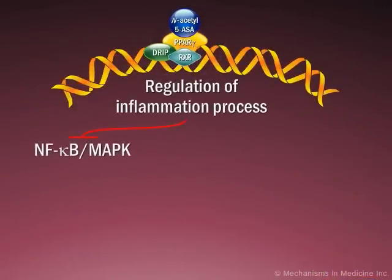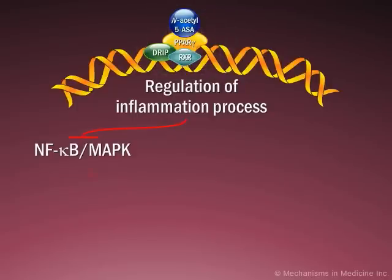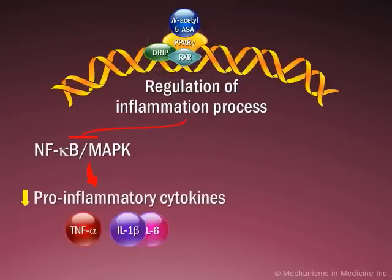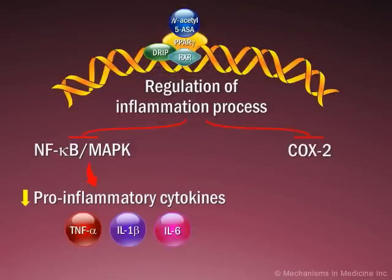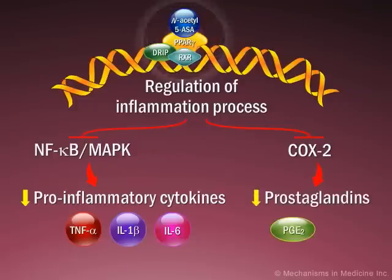PPAR-RXR downregulates the nuclear factor kappa-B, or NF-kappa-B, and mitogen-activated protein kinase, or MAP-K, to reduce production of pro-inflammatory cytokines. This complex also reduces COX-2 activity, leading to a reduction in prostaglandins involved in inflammation.